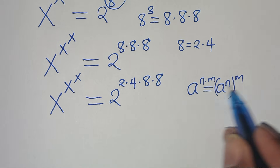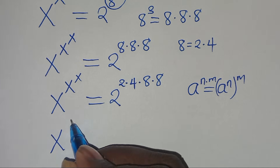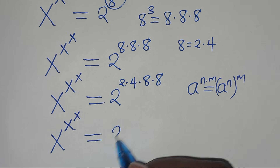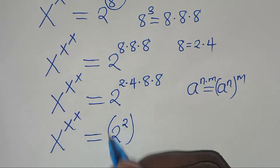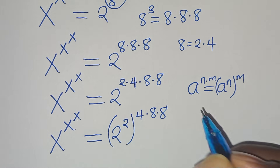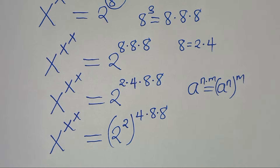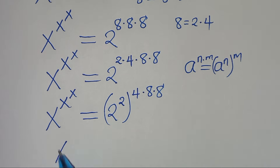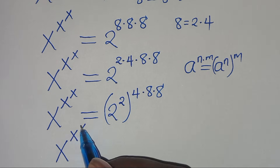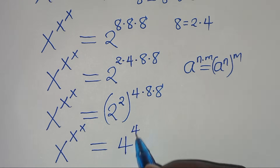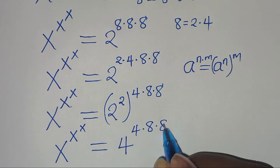Applying this exponent property, x^(x^x) = (2^2)^(4 × 8 × 8). Since 2^2 = 4, this gives us x^(x^x) = 4^(4 × 8 × 8).